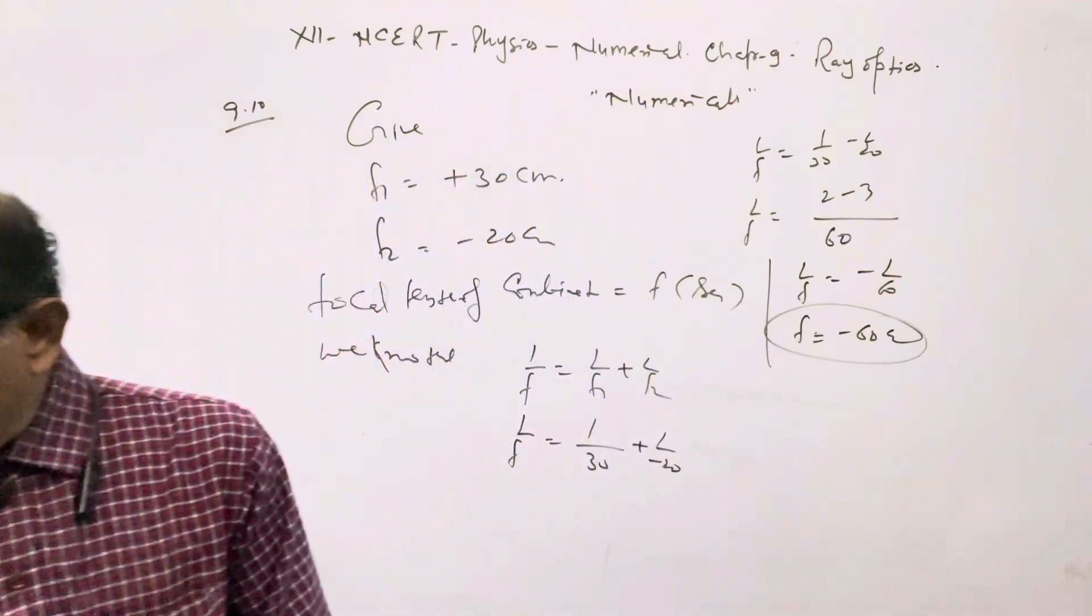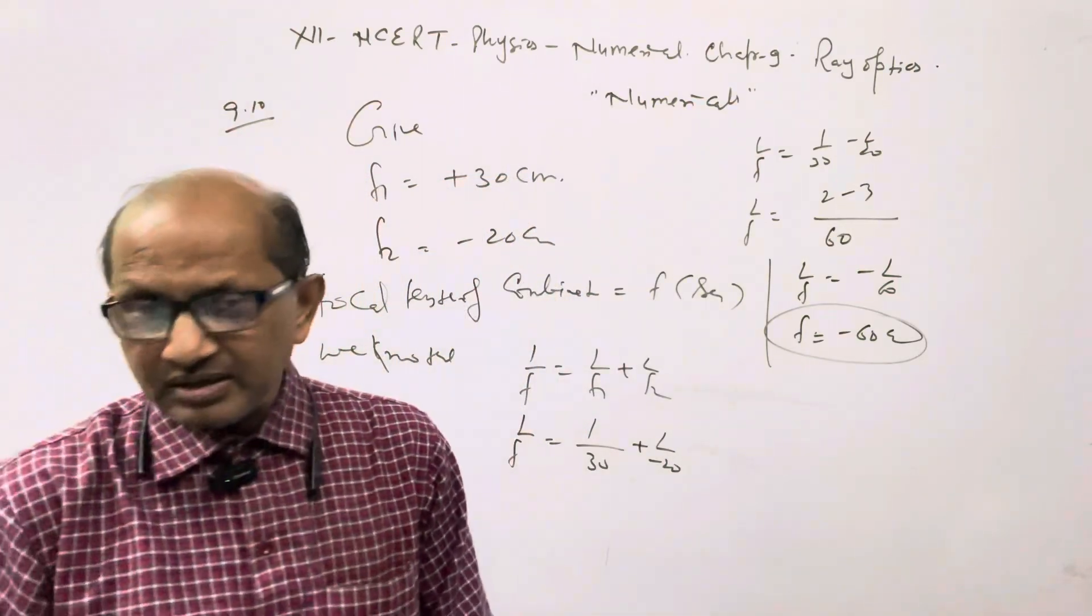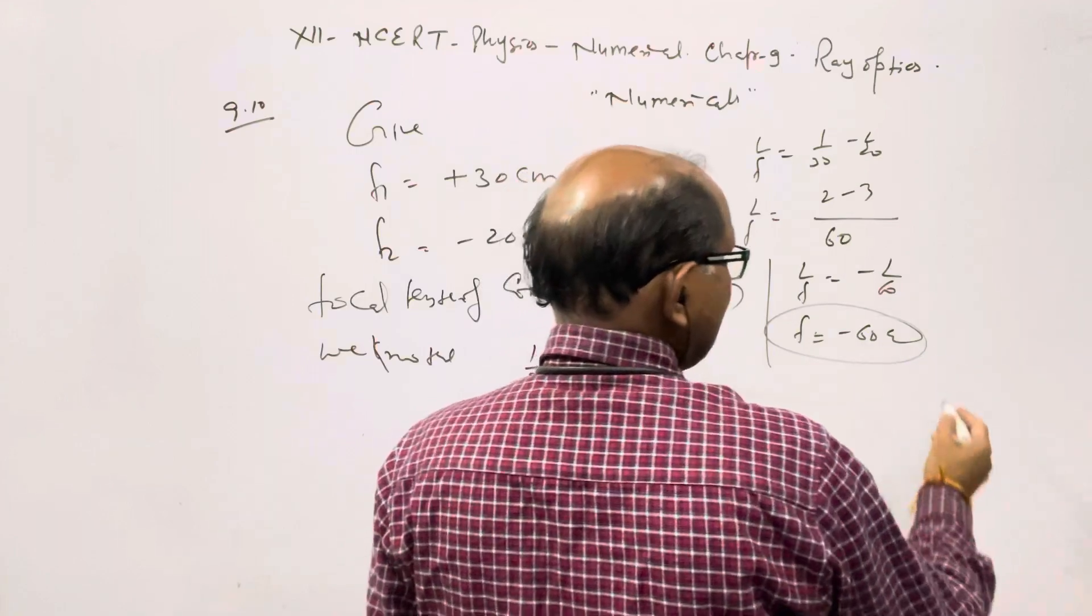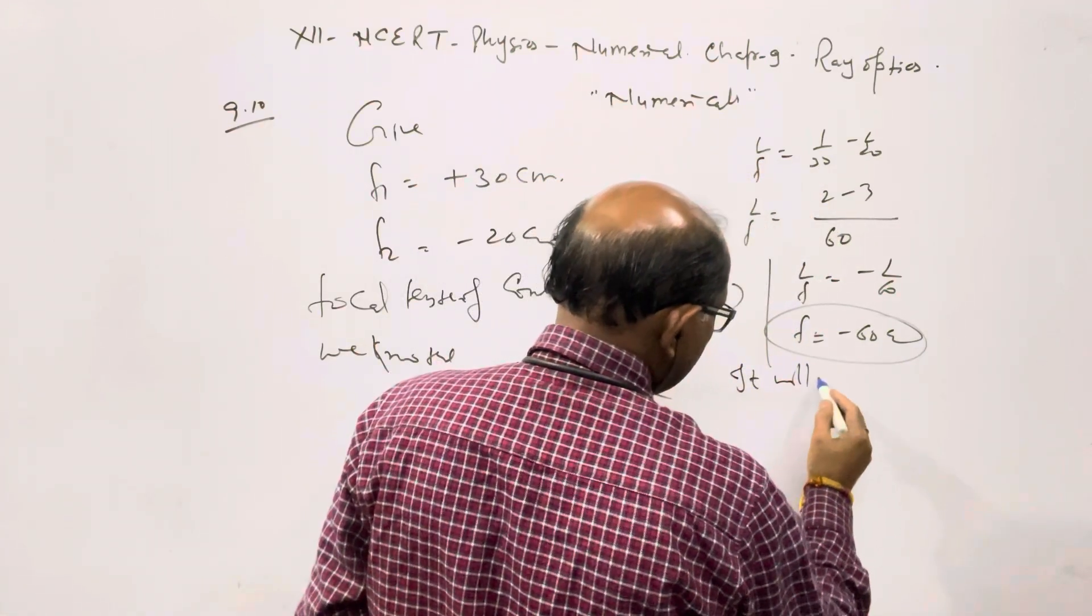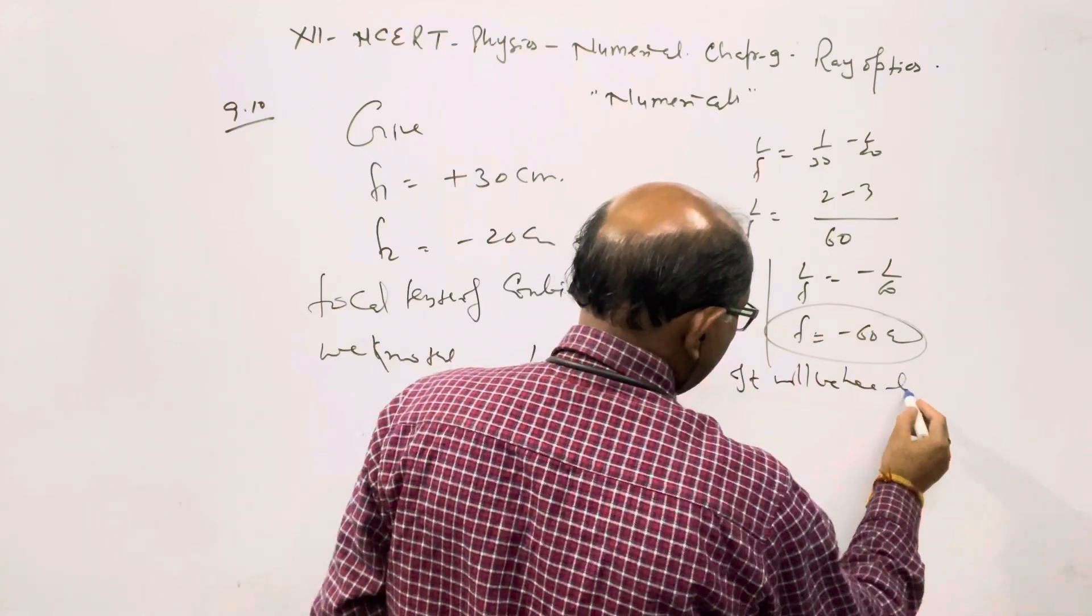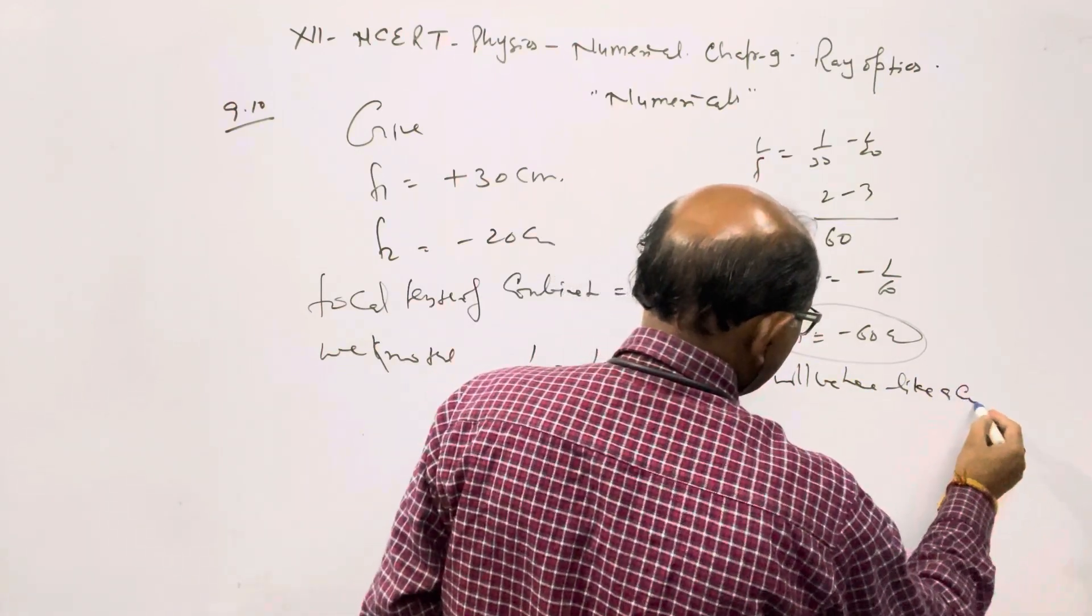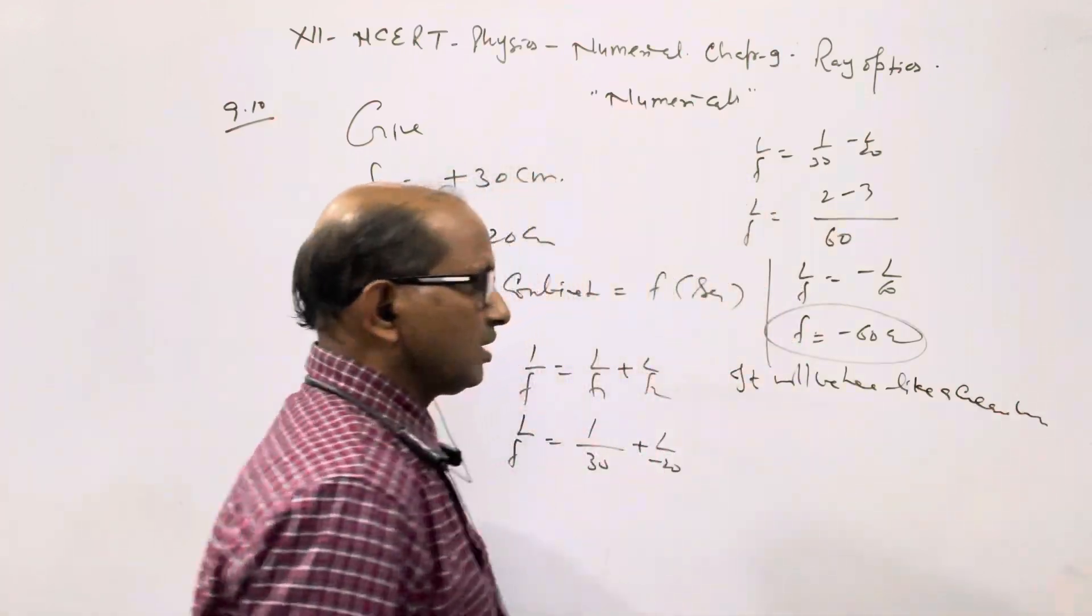This means the combination has a focal length of -60 cm. The negative sign indicates that it will behave like a concave lens.